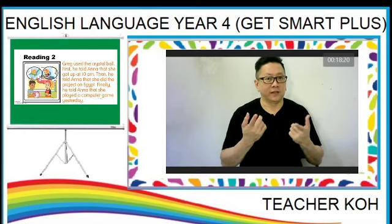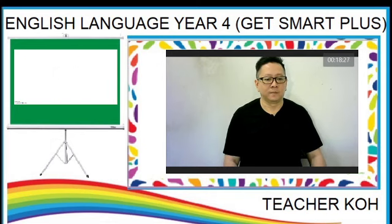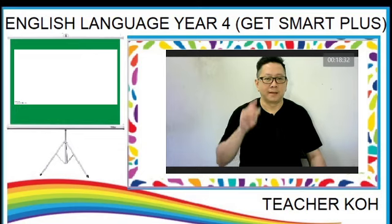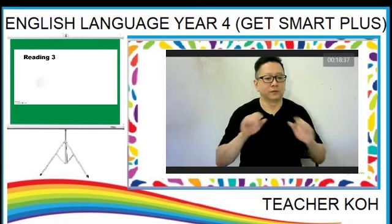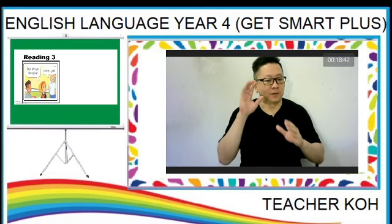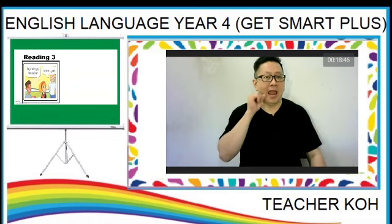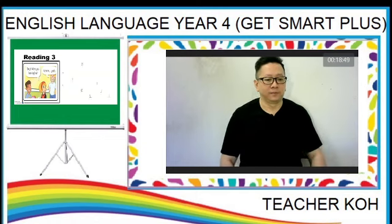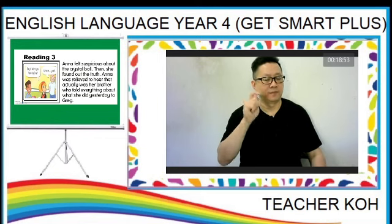Let's look at text number three — Reading number three. You can see the picture. They have one more person in the picture: Tony, Anna's brother. This is the text.